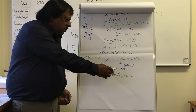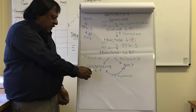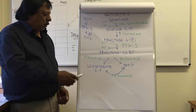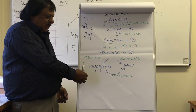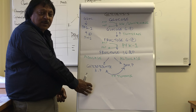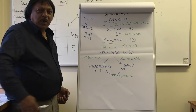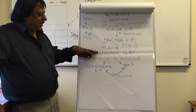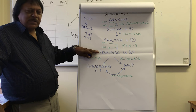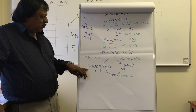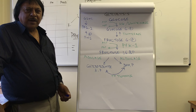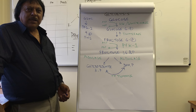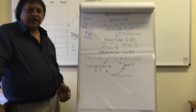The conversion of dihydroxyacetone phosphate to glyceraldehyde 3-phosphate continues to proceed because the glyceraldehyde 3-phosphate is constantly moved down the glycolysis pathway. Essentially, fructose 1,6-bisphosphate is converted to two molecules of glyceraldehyde 3-phosphate, which continue through the glycolysis pathway.